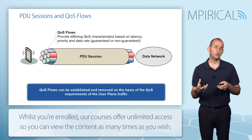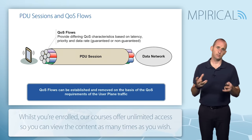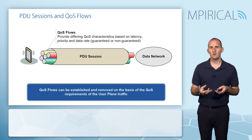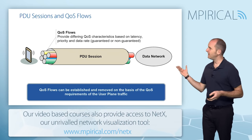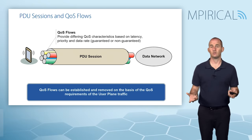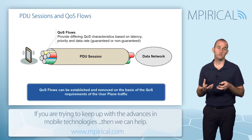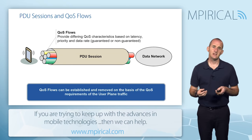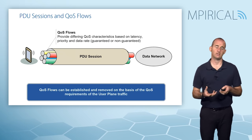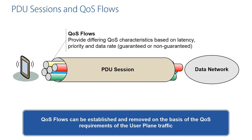The QoS flow characteristics include things like latency, priority, and whether the particular QoS flow is guaranteed bitrate or non-guaranteed bitrate. These flows can also be transient — we can remove flows if necessary. If the data network is the internet, we typically only need one QoS flow — the default, best-effort flow. However, if this is 5G voice services and the data network is the IMS, we could have one QoS flow carrying the signaling associated with voice and a separate QoS flow carrying the actual voice packets.